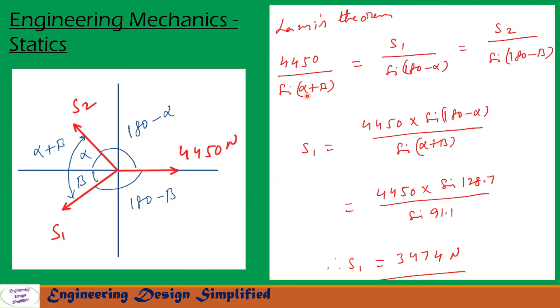So from first and second terms we get S1 equals 4450 times sin(180 minus alpha) by sin(alpha plus beta). After substituting the angles and all the values and then simplification, we get S1 equals 3474 Newton.